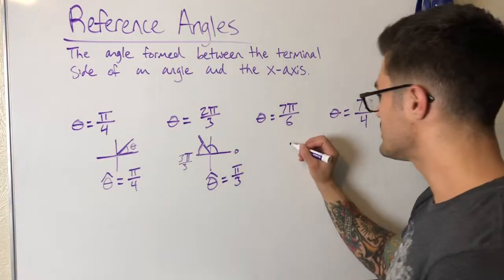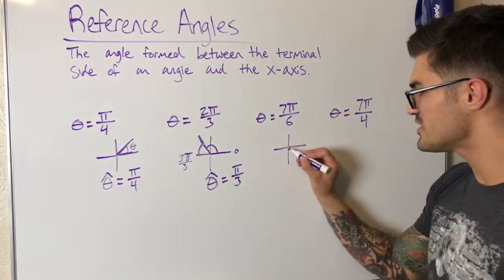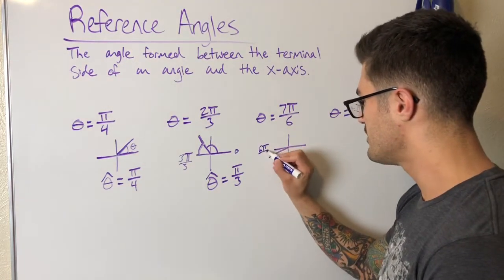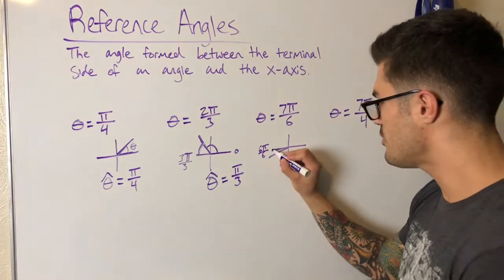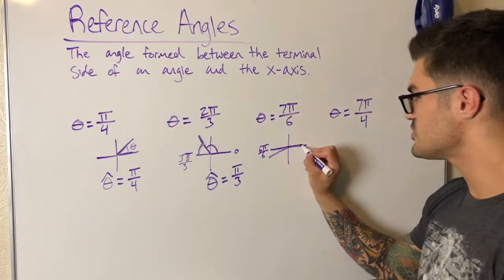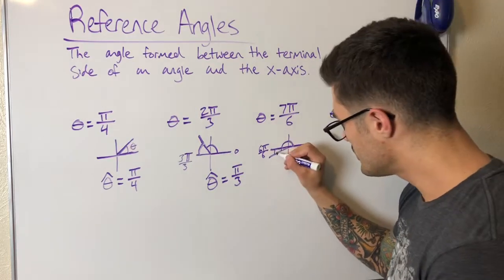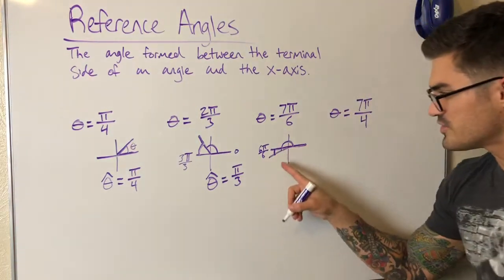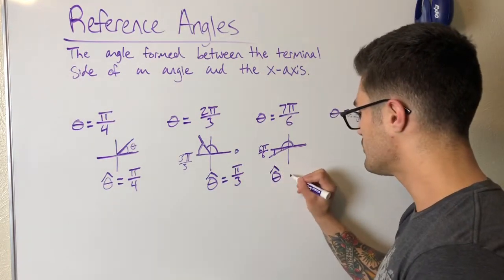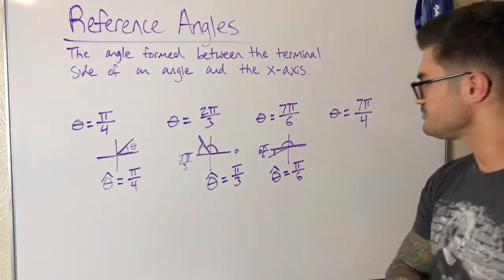For theta equals seven pi over six, I draw the sketch. Seven pi over six is in the third quadrant because six pi over six is pi, and we are just pi over six past pi. So pi over six is the reference angle — it's pretty clear to see. Theta-hat equals pi over six.